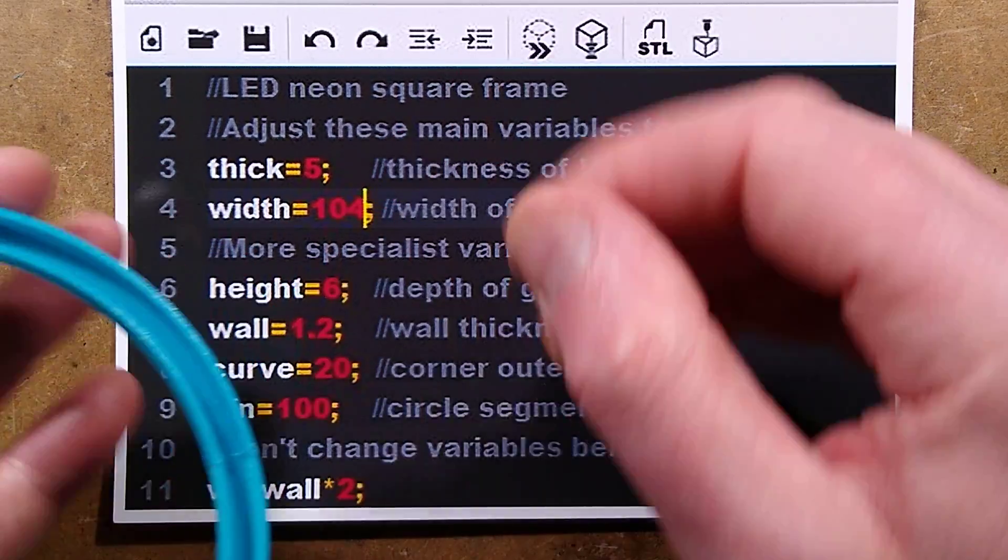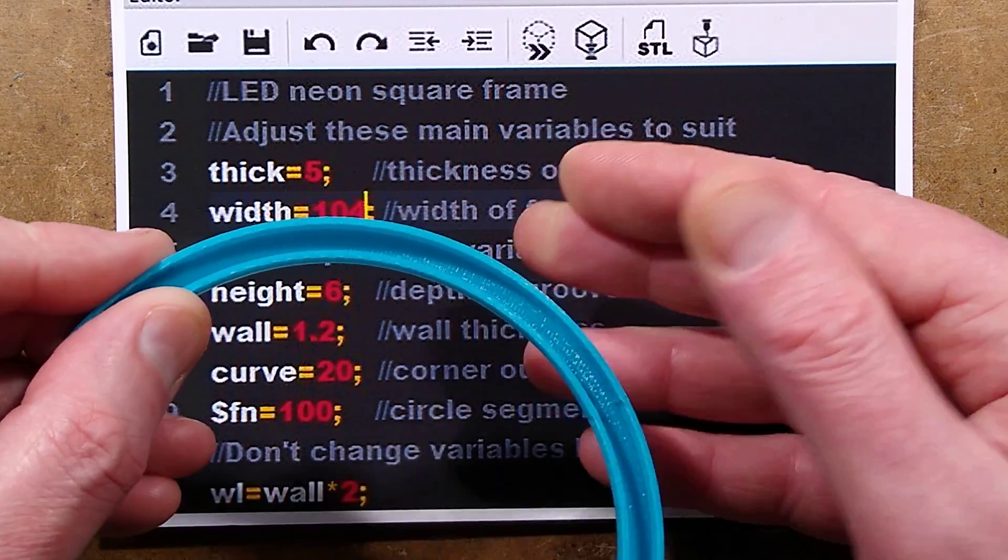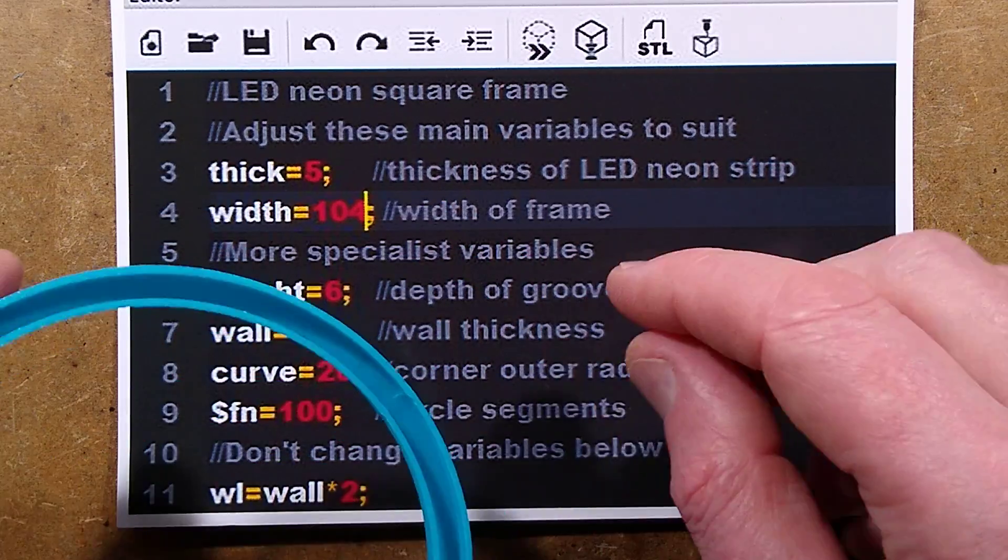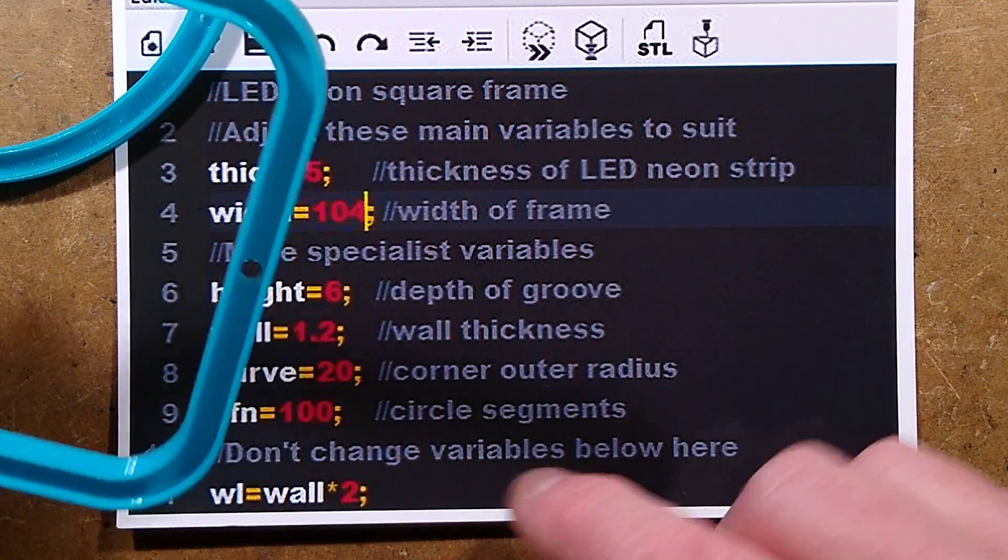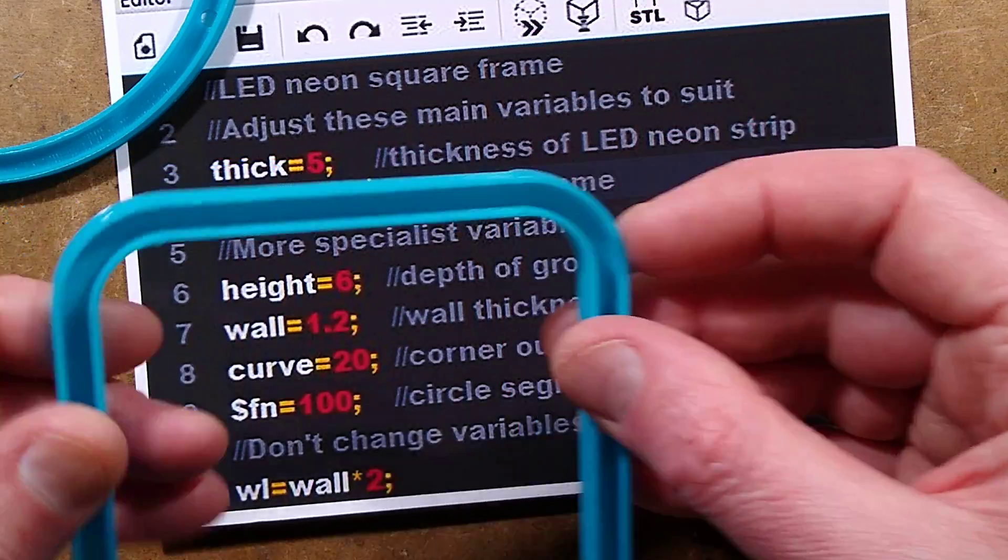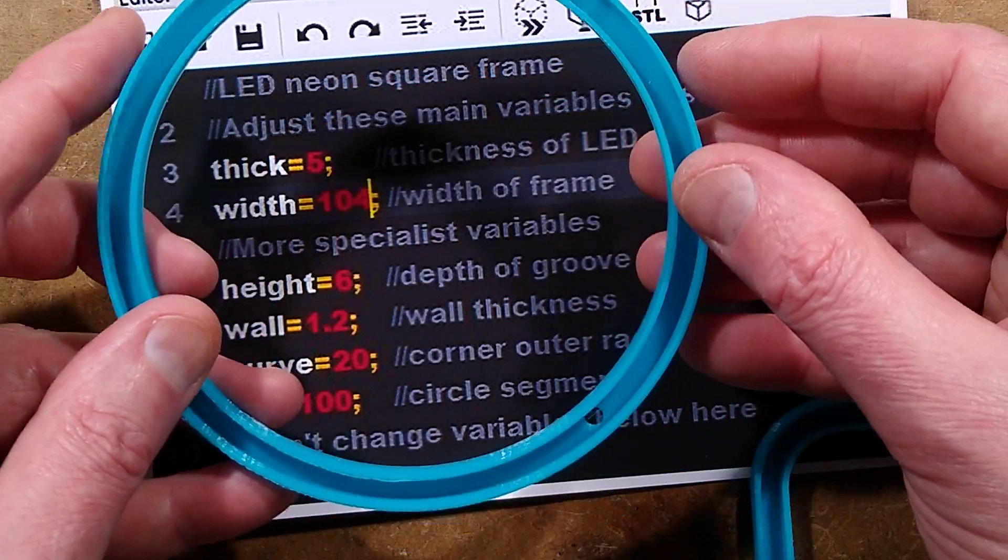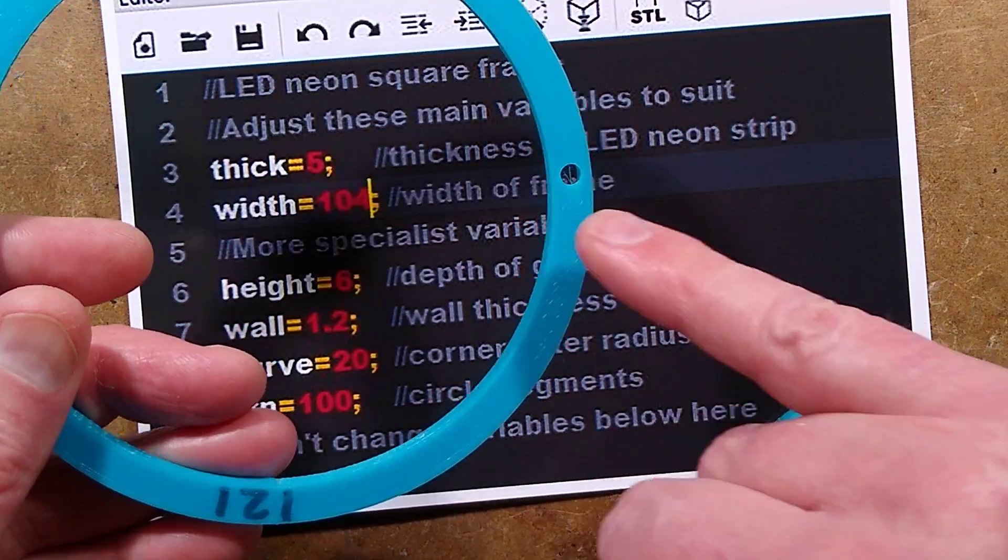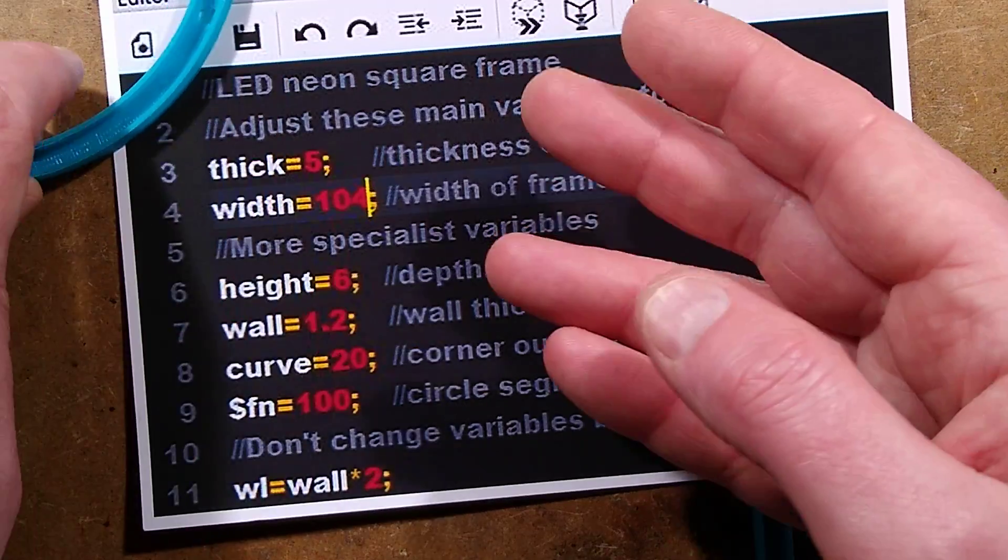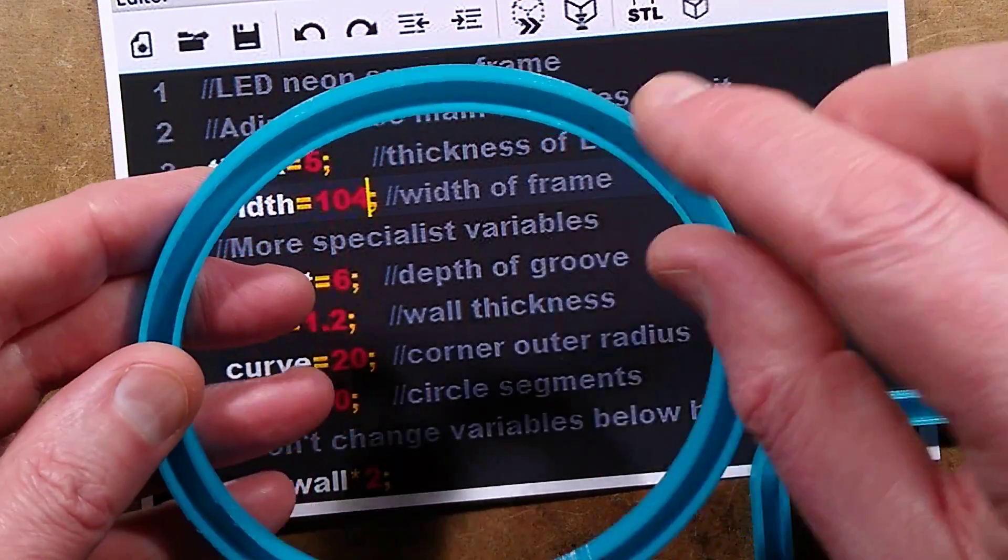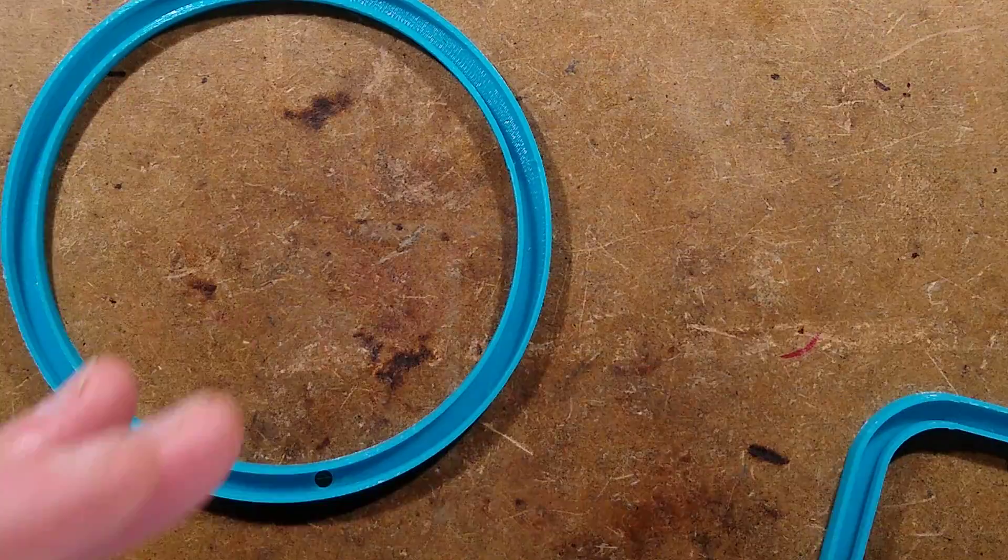The other variables that you can change if you wish are height, that's actually the depth of the groove in here, that's the height of the walls. The wall, which is 1.2mm, that's the wall thickness. I don't recommend going below about 1.2mm. That's based on 3 lines at a 0.4mm nozzle. The curve, in the case of the square one, is the outer curve here. And the function 100, that's the number of segments in the circle. It's less critical. Although if you make the circular frame, you can actually set that as 6 for a hexagon or 8 for an octagon. But note that the little hole that it puts in for you for the cables to go through may not line up.